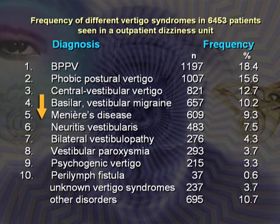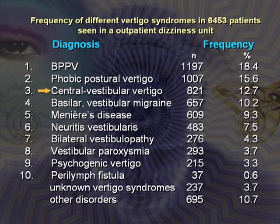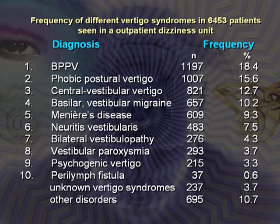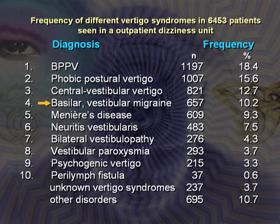These are the ten most common causes of vertigo in our dizziness unit. BPPV accounts for about 18%. Phobic postural vertigo is very frequent. Central vestibular vertigo — mainly lacunar infarctions or MS plaques along vestibular pathways — is next. Vestibular migraine is the most common cause of spontaneous episodic vertigo. Two-thirds of patients also have headache attacks; in one-third, vestibular migraine manifests without headache.